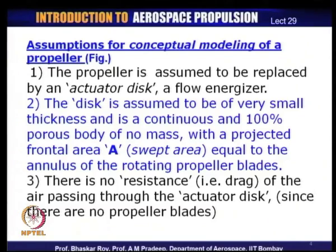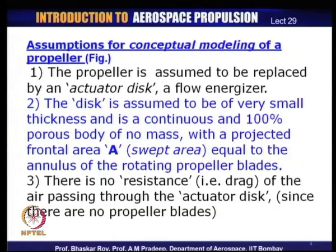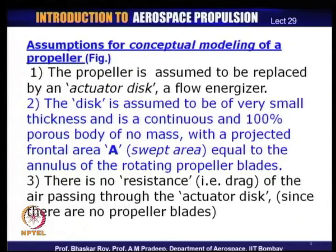The propeller is replaced by an actuator disc, and most importantly this disc is assumed to be of very small thickness — it is a continuous and 100 percent porous body of no mass. It is a disc of infinitesimally small thickness, a continuous body, 100 percent porous with no mass whatsoever. It has a projected frontal area A through which all the air passes — this A is also called the swept area, normally equal to the area swept by the rotating propeller blades.